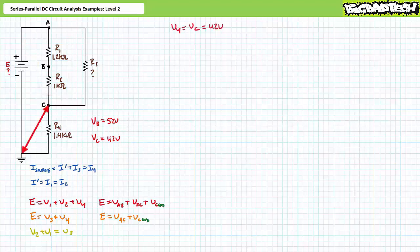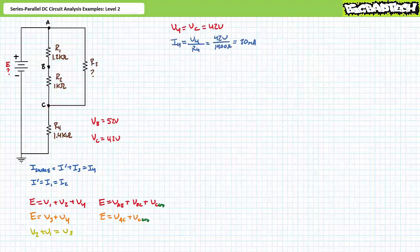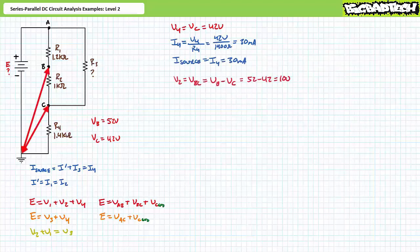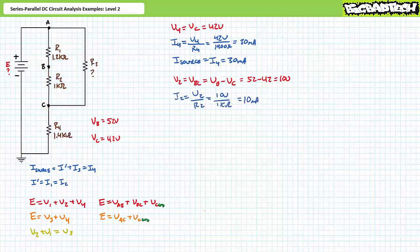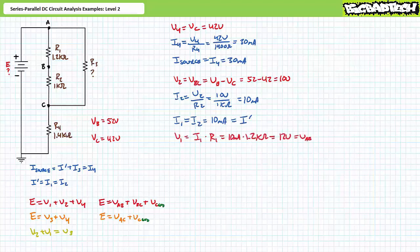Nodal voltage VC with respect to ground is equivalent to the voltage drop across R4, so V4 equals VC, which is 42 volts. An application of Ohm's law solving for I4 demonstrates that I4 is 30 milliamps. Source current is equal to I4, so source current also equals 30 milliamps. Double subscript notation VBC equals VB minus VC, and VBC equals V2. So 52 minus 42 equals 10 volts, meaning V2 equals 10 volts. An application of Ohm's law demonstrates that I2 is 10 milliamps. Current through elements in series is the same, so I1 equals I2 and they both equal 10 milliamps — this equals our branch current I single prime. Solving for V1 demonstrates that V1 is 12 volts.